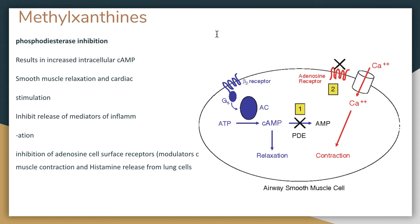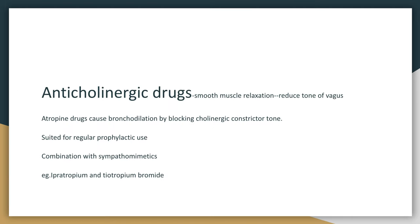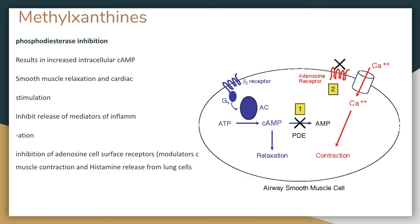Coming to methylxanthines such as theophyllines and aminophyllines. Sympathomimetic drugs increase intracellular cAMP, and methylxanthines also increase intracellular cAMP by preventing its degradation by an enzyme called phosphodiesterase. They result in increased intracellular cAMP, smooth muscle relaxation, and cardiac stimulation, inhibit the release of mediators of inflammation, and also inhibit adenosine cell surface receptors. Adenosine is also a bronchoconstrictor and causes release of histamine from lung cells. So methylxanthines are phosphodiesterase inhibitors and adenosine receptor inhibitors.